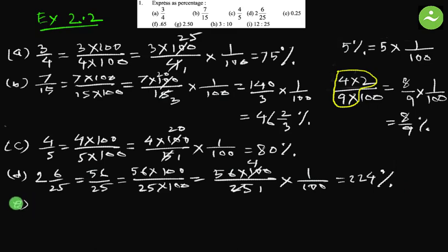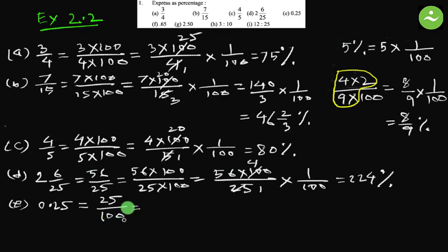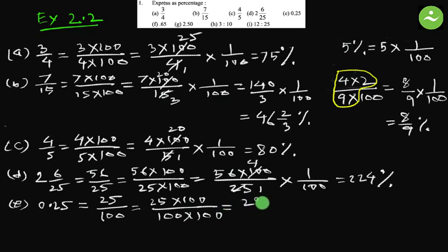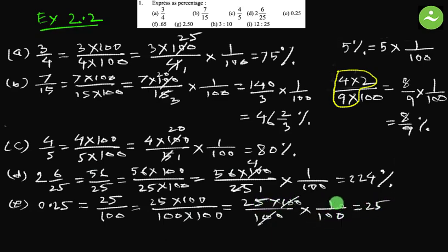Part e: 0.25. This is a decimal number. 0.25 means 25 by 100. Now multiply both by 100: 25 multiplied by 100, divided by 100, multiplied by 100. Separate 1 by 100: so we have 25 multiplied by 100 over 100, multiplied by 1 by 100. Simplify: the two 100s cancel out, leaving 25. The answer equals 25 percent.